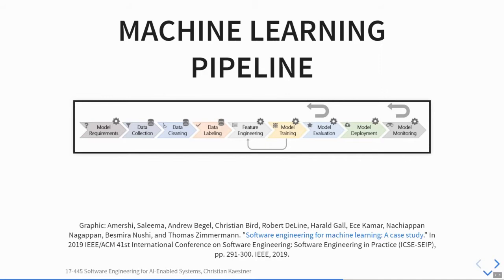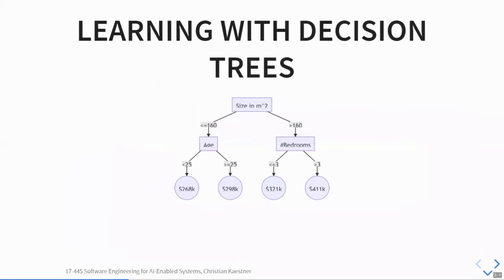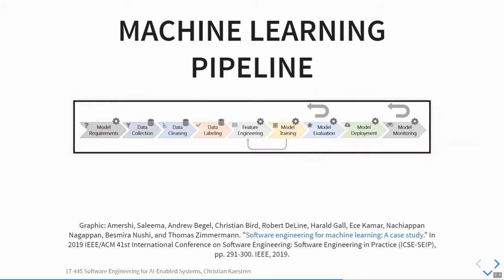Last time we talked a lot about building and learning models. People tend to think of machine learning as pipelines — not just building a model, but having an entire process to reproduce it, with a focus on quality assurance and repeatability. The pipeline has multiple stages: requirements and goals, data collection and cleaning, data labeling, feature engineering, model training, model evaluation, and then deployment and monitoring.